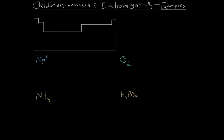We've got one sodium atom in this ion, and we've got a single positive charge. So therefore the oxidation number of sodium is going to be plus one. It's very straightforward but a useful exercise to do. The ion has a charge of plus one, so the oxidation state of sodium is plus one.